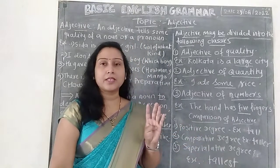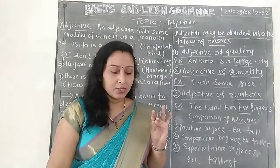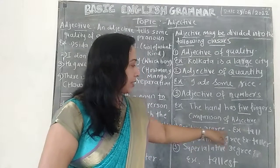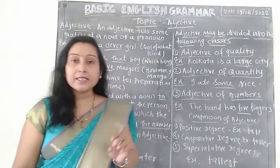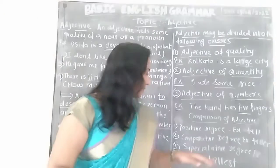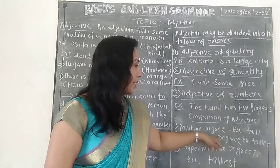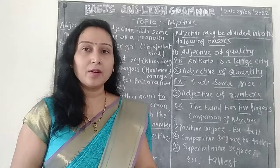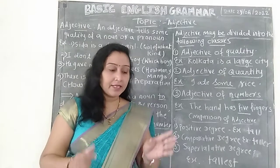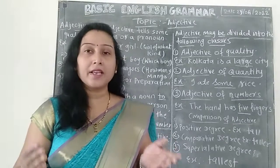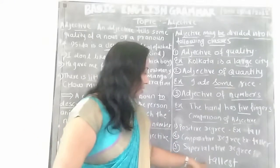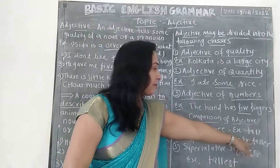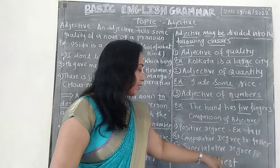There are three degrees: positive degree, comparative degree, and superlative degree. In positive degree, take example: Gopal is a tall boy. In comparative degree: Mohan is taller than Gopal. In superlative degree: Sham is the tallest boy in our class. So positive degree is 'tall,' comparative degree is 'taller,' and superlative degree is 'tallest.'